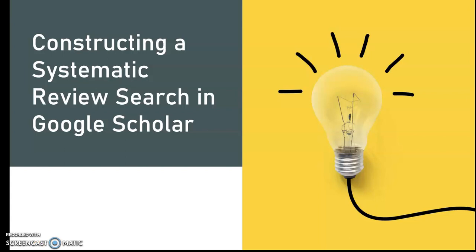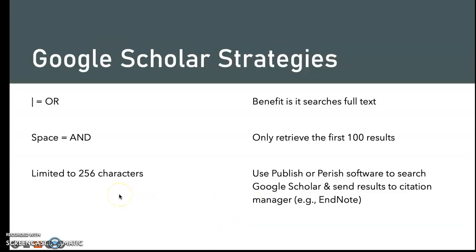Constructing a systematic review search in Google Scholar. When constructing a systematic review search, you want to use the vertical bar which equals OR, and a space represents AND. You're limited to 256 characters. The benefit of using Google Scholar is that it searches full text, which is different from PubMed, because PubMed searches the title and abstract but doesn't search the full text of the article.